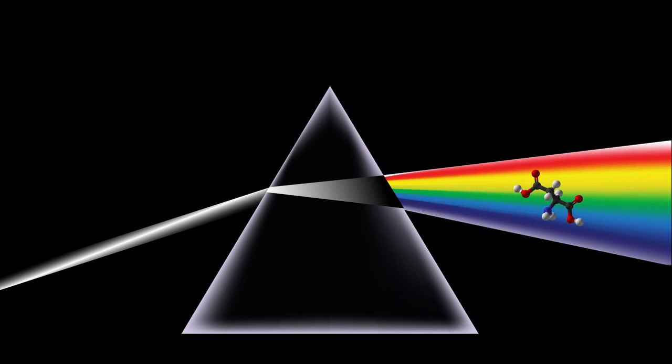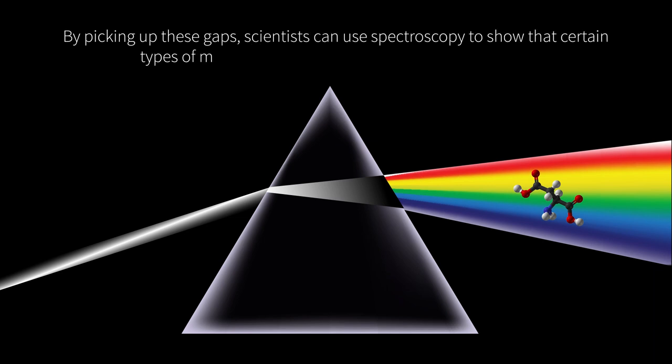Later on, scientists discovered that as certain molecules absorb certain frequencies of light, they can create distinctive gaps in the light spectrum. By picking up these gaps, scientists can use spectroscopy to show that certain types of molecules lie in the path of the light being split.